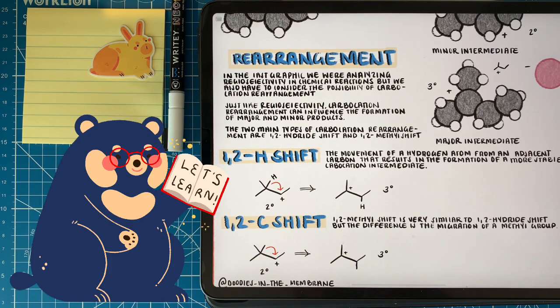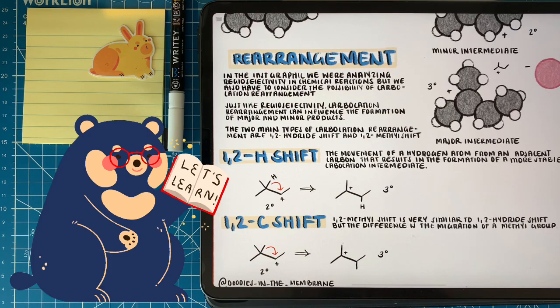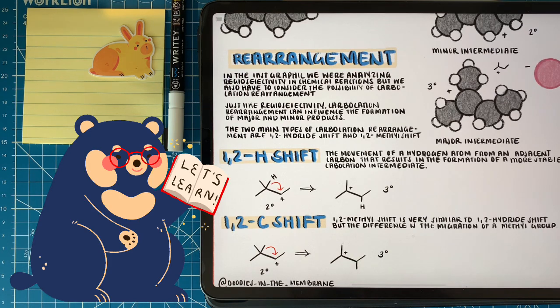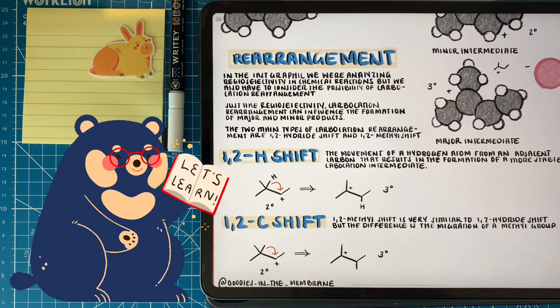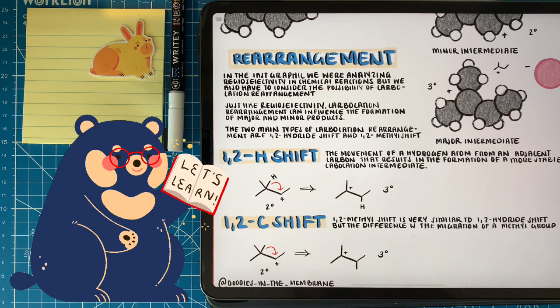So any time that we can stabilize our intermediate in any way that benefits or makes it even more stable, it's going to happen. Now this cannot happen from two or three carbons or hydrogens way down the molecule. This can only be associated with adjacent relationships, and it can only happen once. So this is another way in which reactions can stabilize their intermediates.